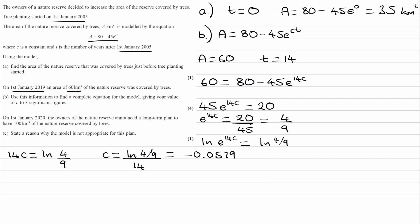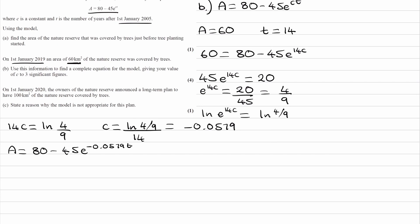That will be -0.0579 when you type it into your calculator. Now we have what C is, we can put that into our equation for area. We end up with A = 80 - 45e^(-0.0579t).